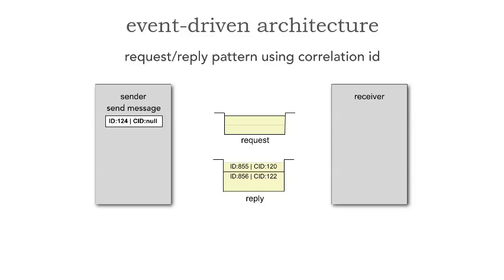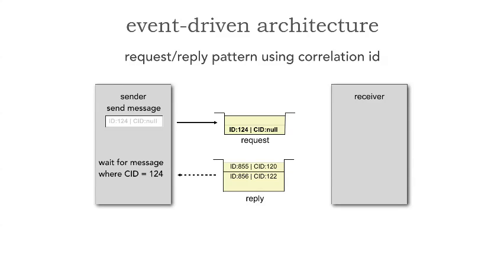What I want to do is send a message to say: give me the first name of customer ABC. Notice when I send that message to the request queue, it has an ID — number 124. I then do a blocking wait on that reply queue using something called a message selector, which could also be a message filter, waiting for the message where that correlation ID equals my message ID, which is number 124.